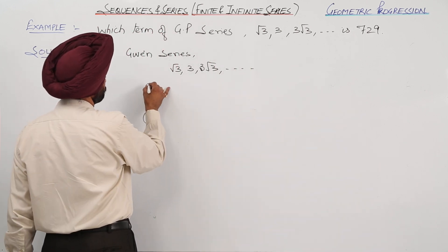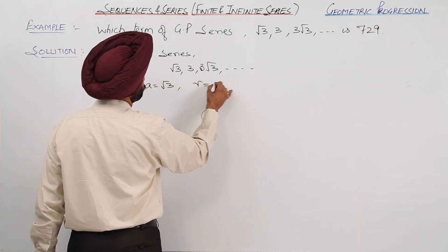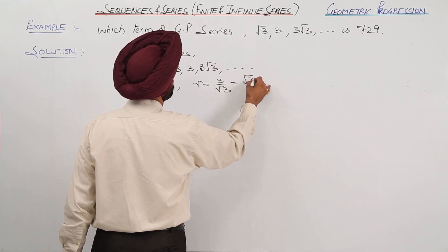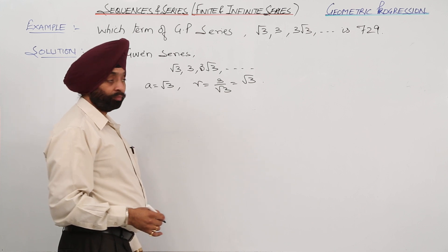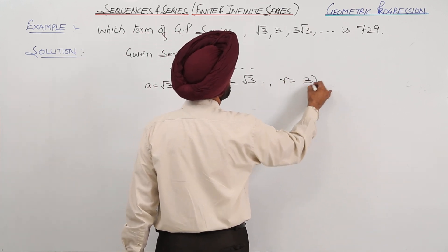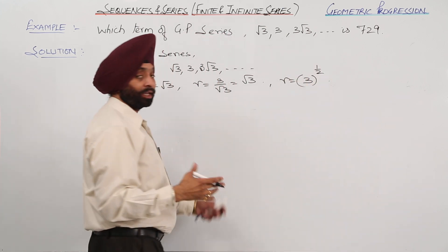We have first term a = √3, and common ratio r will be 3/√3, which equals √3, or you can write r = 3^(1/2).